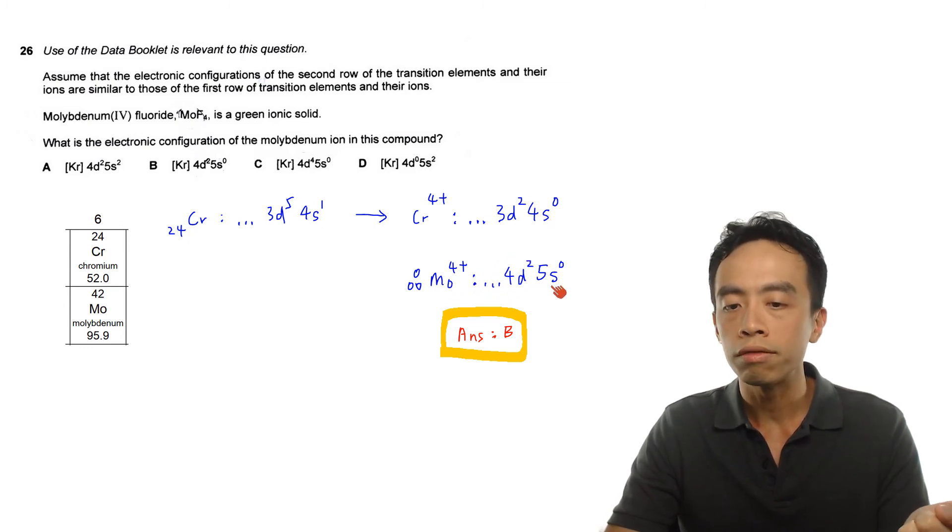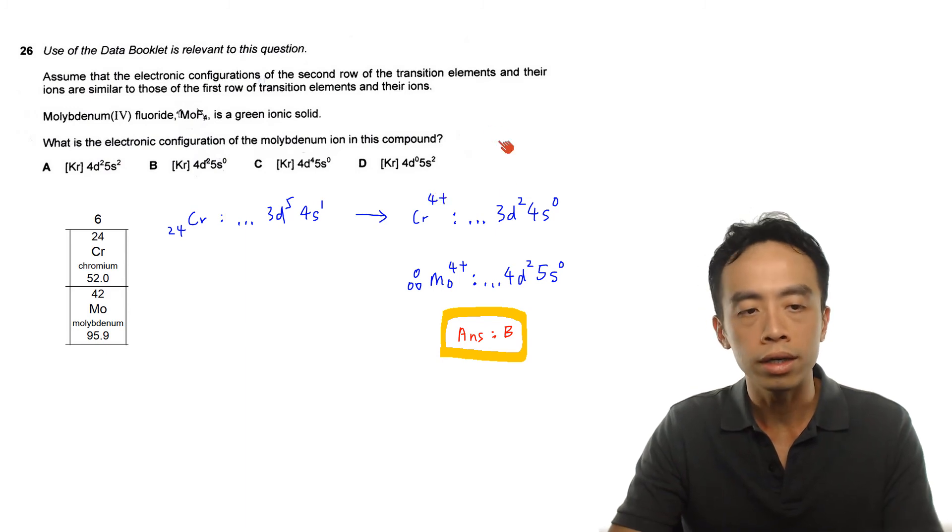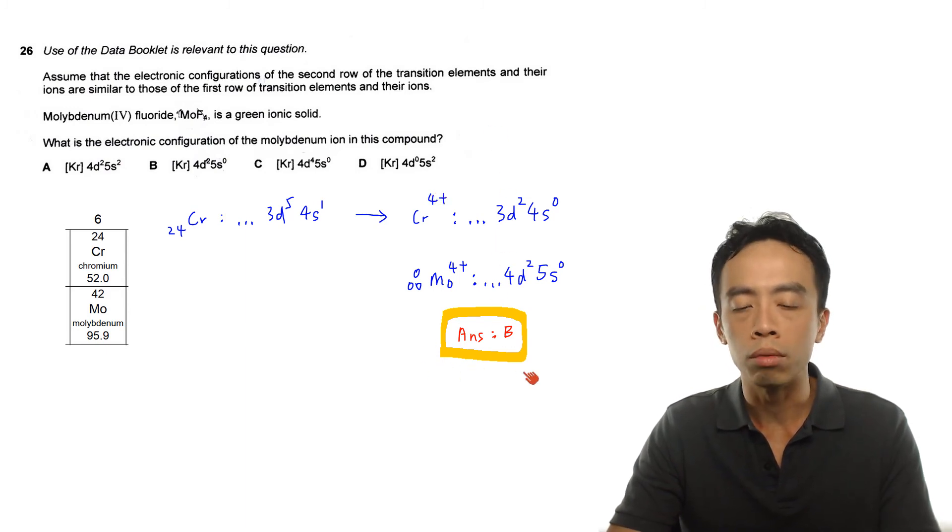this becomes 5s0. So we will expect the electronic configuration for Mo4+ to be 4d2 5s0. We can look back at the options, and we should be able to figure out that the answer to this question will be option B.